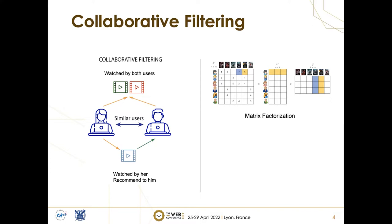With this idea, researchers have been proposing various approaches, one of which is matrix factorization, which tries to project user and item in a lower dimensional space. This kind of latent factor models still largely dominates the collaborative filtering research literature due to their simplicity and effectiveness. However, these models are inherently linear, which limits their modeling capacity.